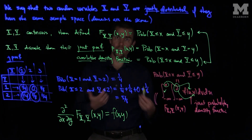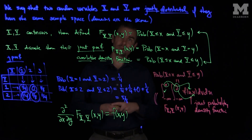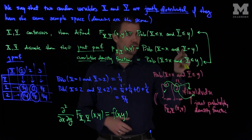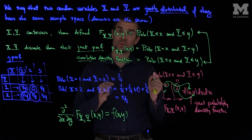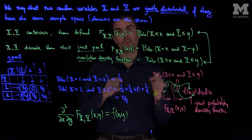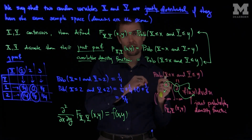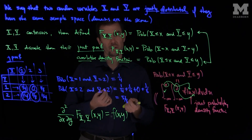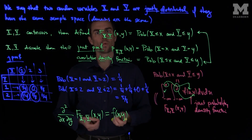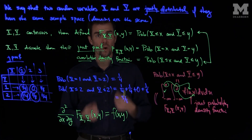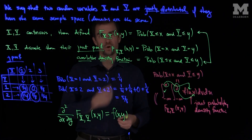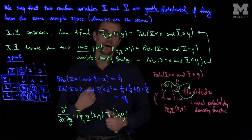That gives us the interrelationship between these two quantities. So for a discrete random variable, you have the joint probability mass function, where the probability that X equals x and Y equals y comes from a discrete set. You can find the cumulative density function by adding up all values less than or equal to x and less than or equal to y. Whereas for a continuous random variable, the corresponding sum turns into an integral. And if you differentiate that integral twice — once with respect to x and once with respect to y — you can relate the cumulative density function of x and y with the joint probability density function of x and y. Thank you very much.